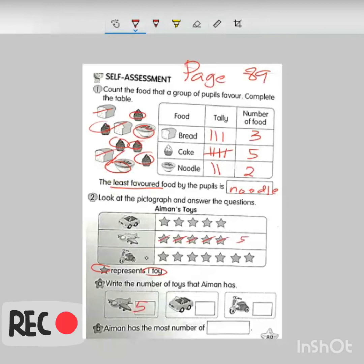How about the car? One, two, three, four, five. We got five toys also. Last one. One, two, three, four, five, six, seven. Seven. So Aiman has the most number of which toys? Aiman has the most number of scooter or motorbike. Scooter.